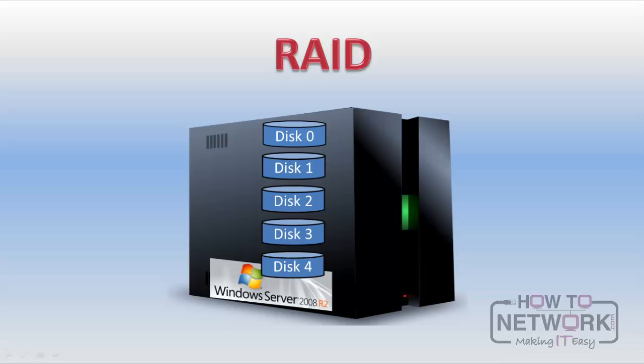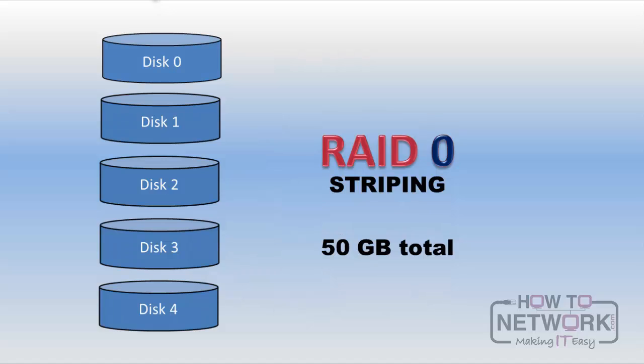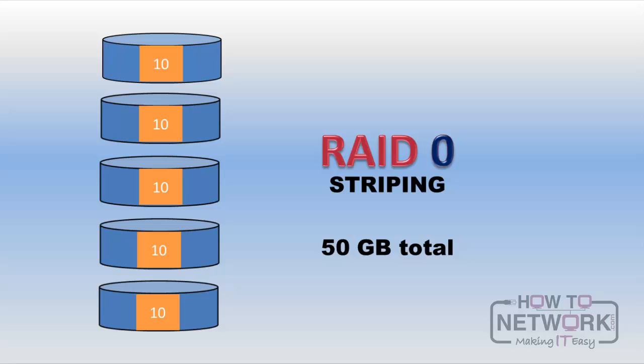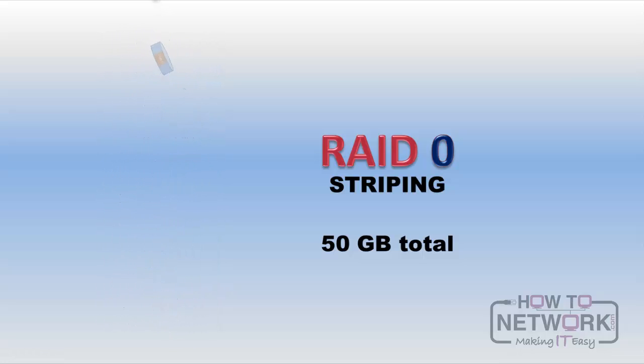The RAID variations are numbered, such as RAID 1 or RAID 5. In this module, we'll only look at those supported by Microsoft. We begin with RAID 0, which serves just one purpose: performance. RAID 0 is called striping. The disk subsystem is a performance bottleneck. Striping can improve throughput by writing data to several disks in a stripe instead of waiting for a particular disk to return to a sector. The stripe must be the same size on each disk — in this case, 10 gigabytes. Because we have five disks, the operating system would see this as a 50 gigabyte volume. But RAID 0 is for performance only. If any disk fails, we lose all 50 gigabytes of data, so be sure to back up your data.